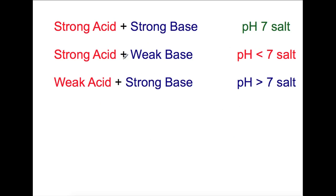When producing salts, you may have previously thought of acid plus alkali neutralizing to produce a pH 7 solution. However, that depends on what acid and alkali you have. If you have a strong acid and a strong base, your salt will have a pH of 7. If you have a strong acid and a weak base you'll get a pH of less than 7, and a weak acid with a strong base will give a pH of more than 7. You can think of this like a tug of war where the pH is pulled to the side which is stronger.